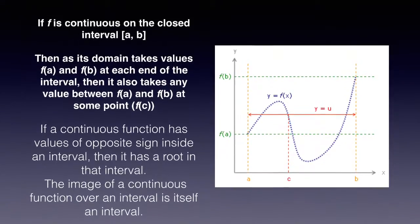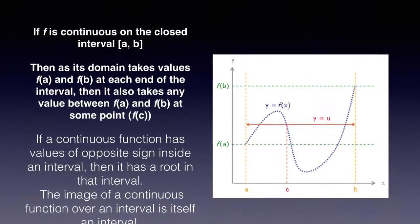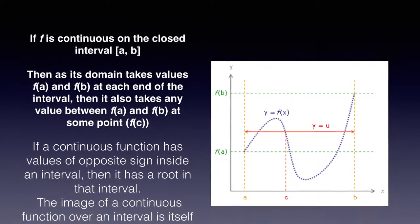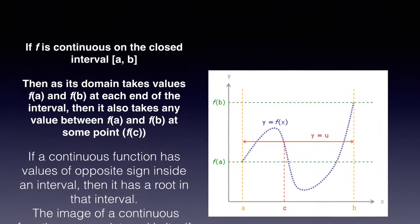If function f is continuous on the closed interval a to b, then as its domain takes values f of a and f of b at each end of the interval, it also takes any value between f of a and f of b at some point f of c.